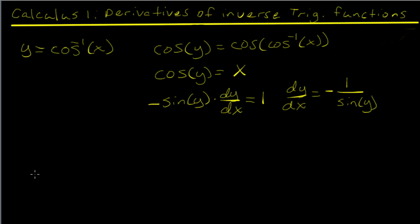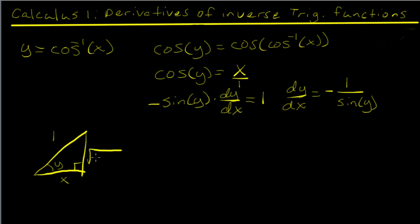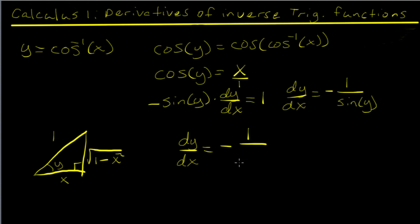Let's construct our triangle again. The angle is y, and we know the cosine of y is x over one — that's adjacent over hypotenuse. By the Pythagorean theorem, the opposite side is the square root of one minus x squared. Plugging that in, the sine of y — opposite over hypotenuse — is the square root of one minus x squared. So our derivative is negative one over the square root of one minus x squared.